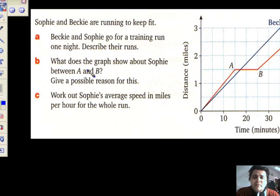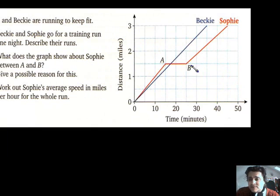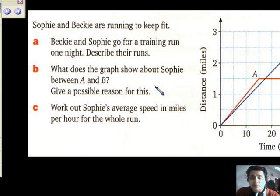Now, part B, what does the graph show about Sophie between A and B? Well, between A and B, she's clearly stopped because time is going on, but the distance isn't increasing. Give a possible reason for this. She needed to stop to rest, for example. Just leave it like that. It's entirely functional, understandable. She maybe isn't as fit as Becky. So don't write down she's not as fit as Becky. Write down she needed to stop to rest for half an hour. Simple as that.